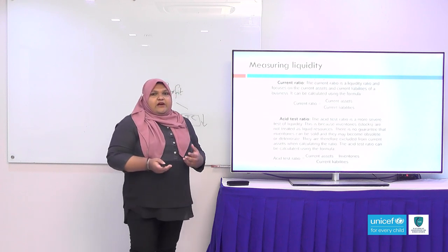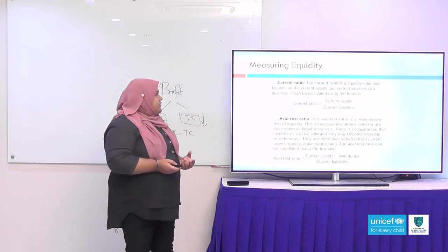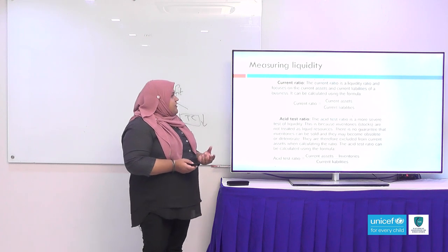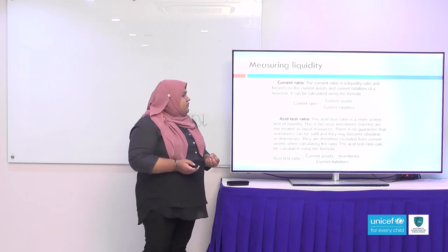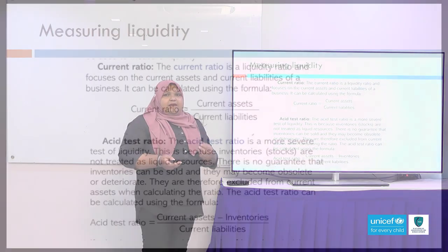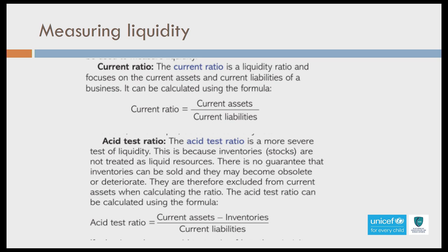There are two formulas to measure liquidity. The first is the current ratio, which is a liquidity ratio focusing on current assets and current liabilities. It is calculated as current assets divided by current liabilities. If the answer is 1, that means 1:1 — you have one asset for every one liability. If the answer is less than 1, the company's liquidity position is not good. They should have at least 1 or more for every liability they owe.